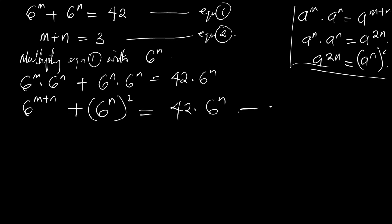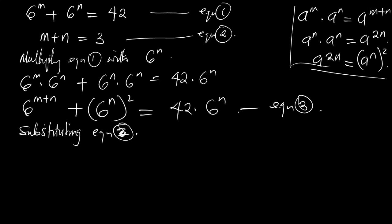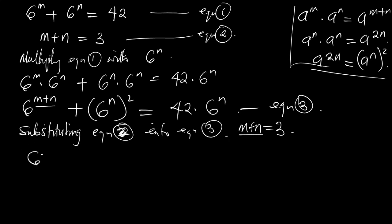This is our equation 3. Now, substituting equation 2 into equation 3: since m plus n equals 3, wherever we see m plus n we replace it with 3. So we have 6 raised to power 3 plus 6 raised to power m, all squared, equal to 42 times 6 raised to power m.